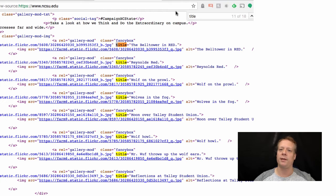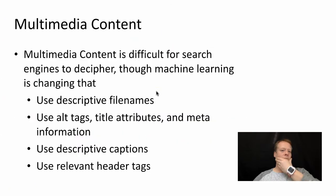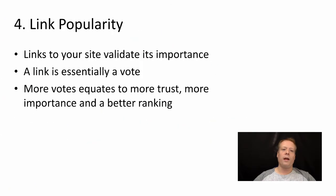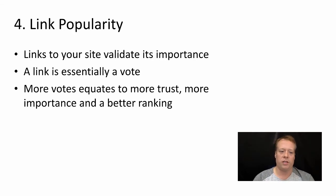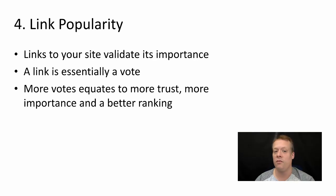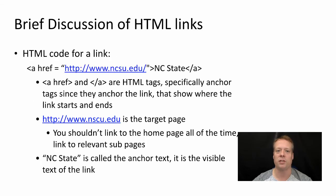Okay, let's go back to the search engine optimization discussion. Besides all the on-site optimization you can do, one of the most important things to increase your search engine results is to increase the popularity of your links. Links to your site validate importance — a link is essentially a vote, and more votes equates to more trust, more importance, and a better ranking in the search engine results pages.